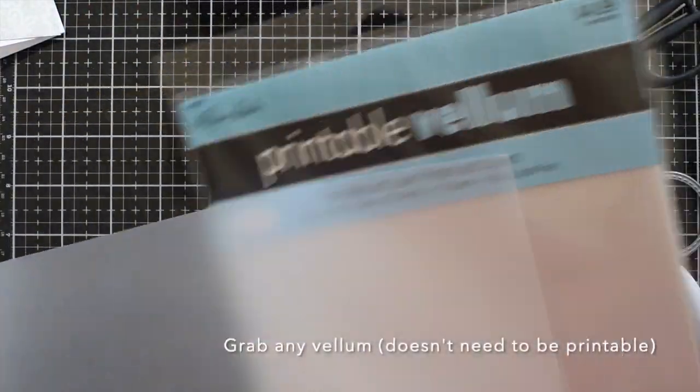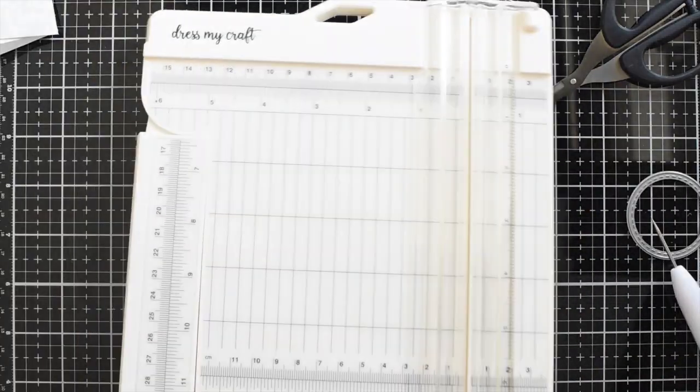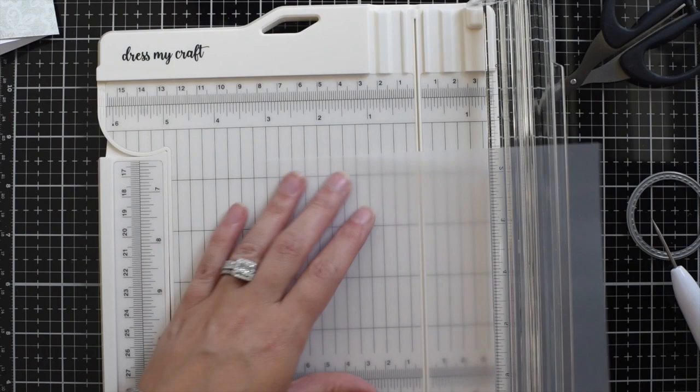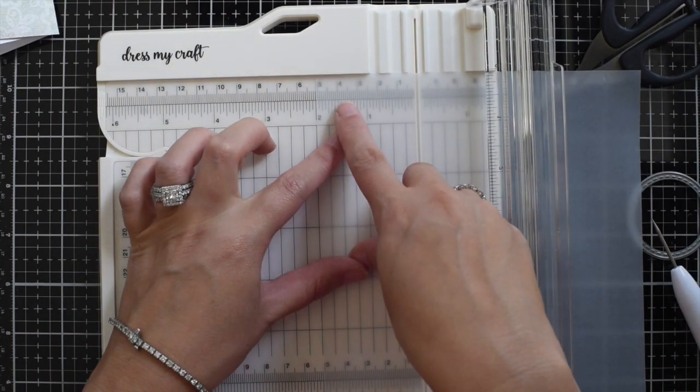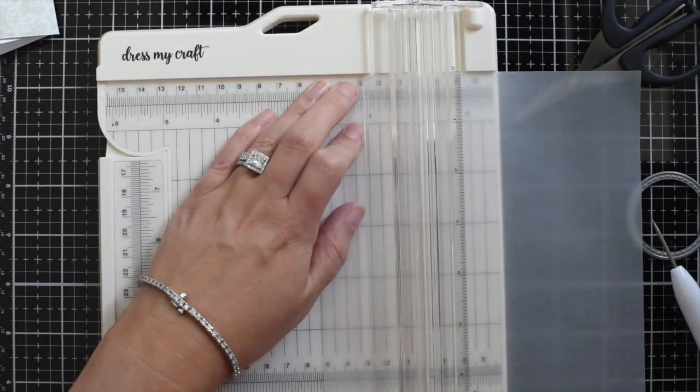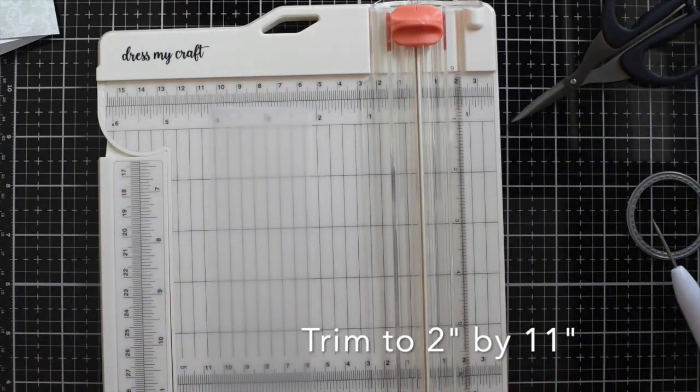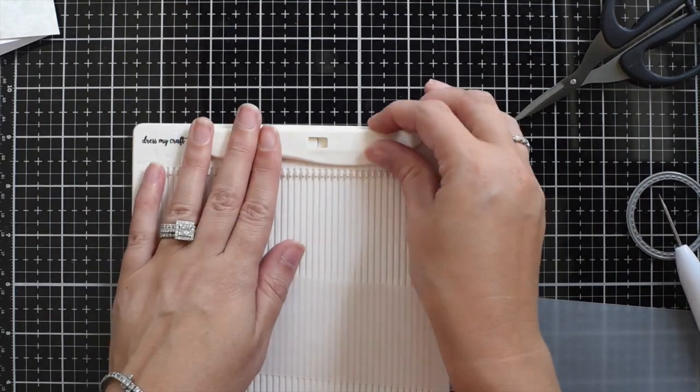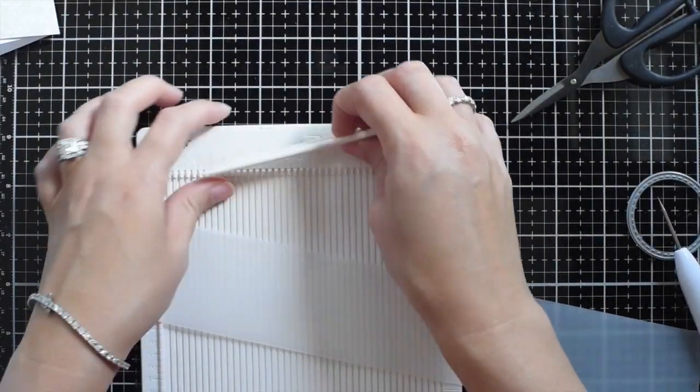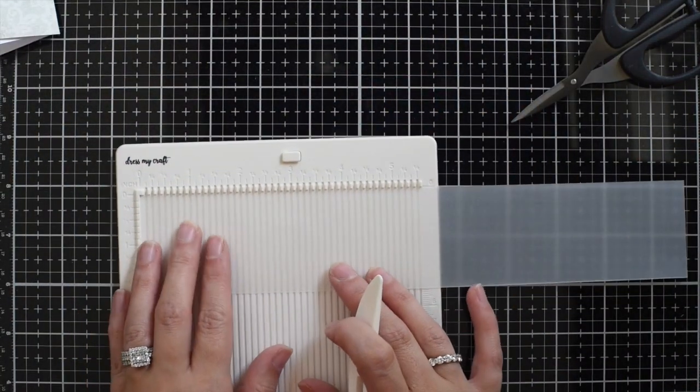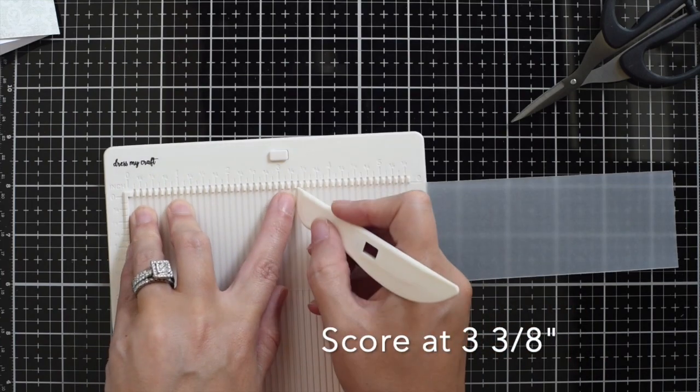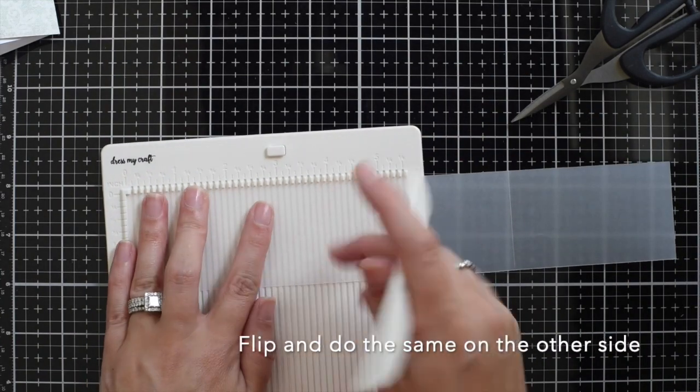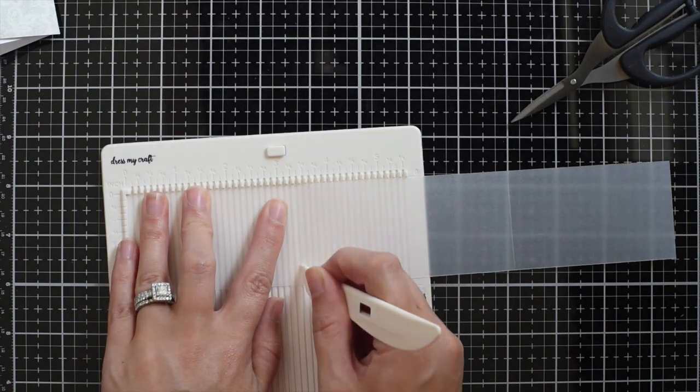Next I'm going to grab some vellum. This was an eight and a half by eleven sheet. So I'm going to cut it at two inches by eleven inches, and then I'm going to get my mini scoreboard back out. And I'm going to gently make a score line at three and three-eighths inch and then flip it and do the same three and three-eighths inch.